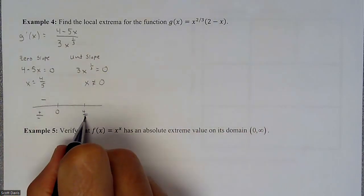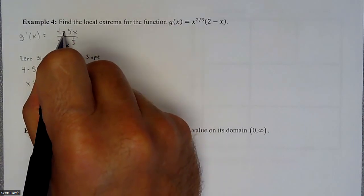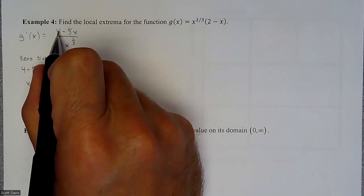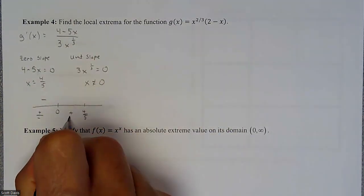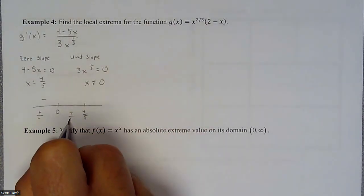And then if you go from zero to four fifths, like a half maybe, we take four minus a half of five. That would be two and a half. So four minus two and a half is going to keep a positive value. And then we're cube rooting a positive, multiplying it by positive. So that would be a positive.